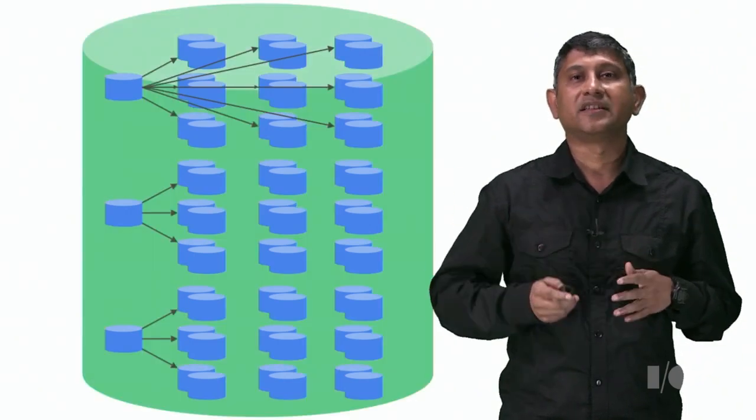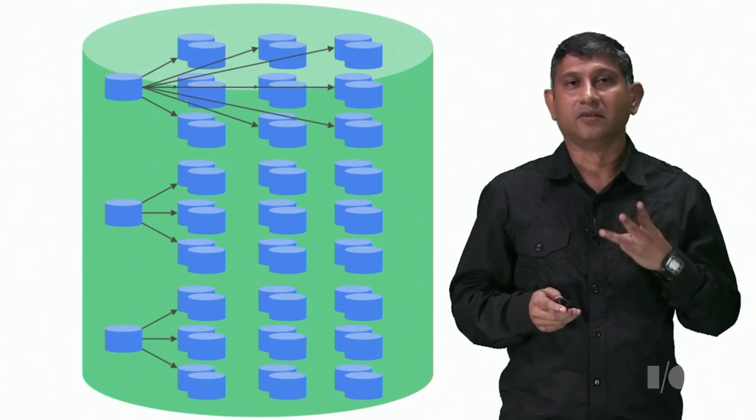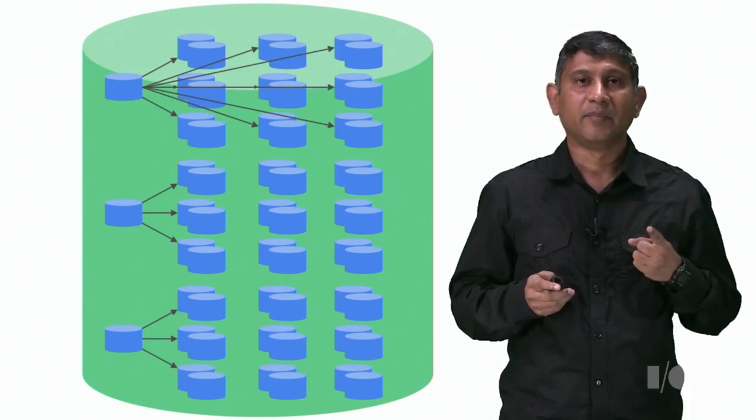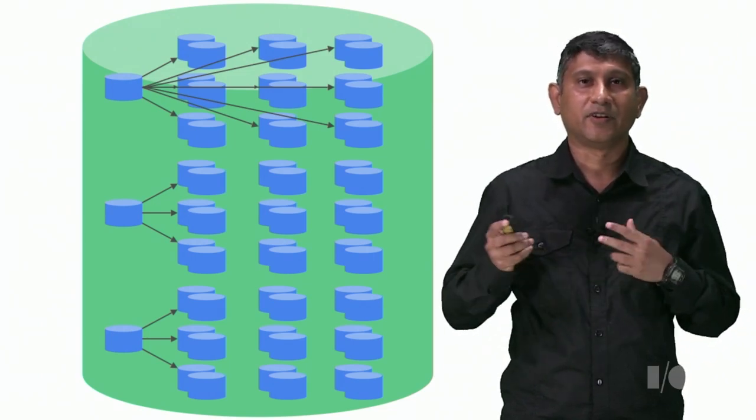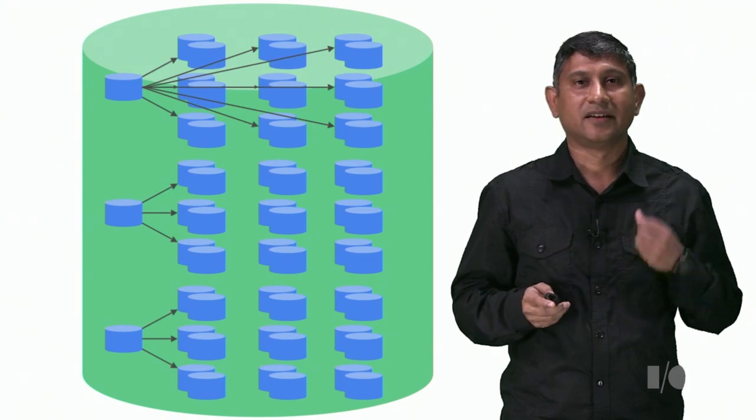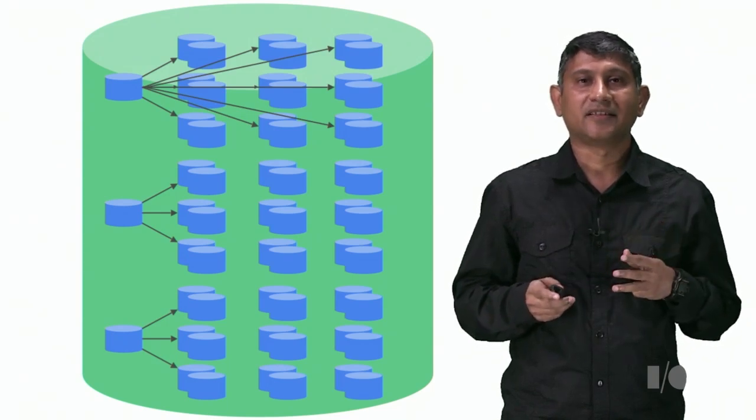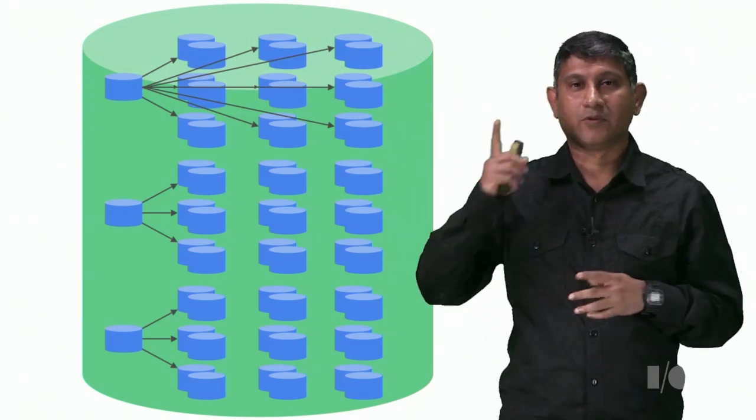So this is how Vitess was born. We had three goals. One was to automate maintenance tasks. Two is to write a query mediator that will protect the databases from bad elements. And three, make it such that this big farm appears as one single database.